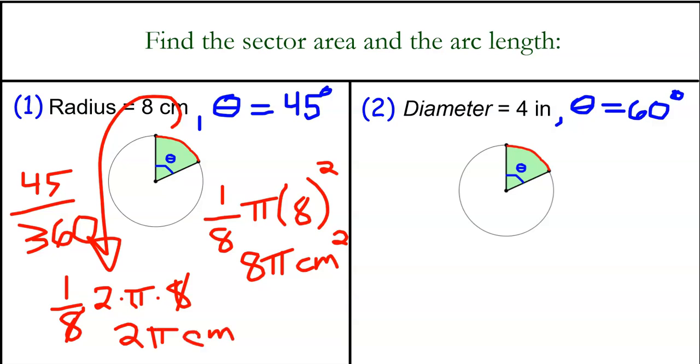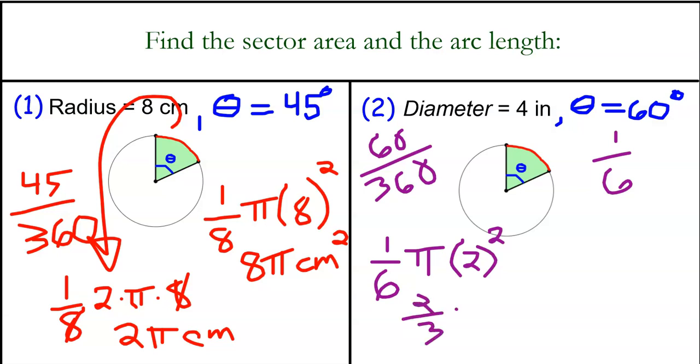Then for the other circle on the right, 60 over 360, that is the fraction that we're looking at. 60 over 360 is one-sixth. So for the area of that sector, that is one-sixth times pi, the radius squared is two squared because the diameter is four. And then we can see that that becomes two-thirds pi, because four over six is two-thirds, and that is inches squared for the area.